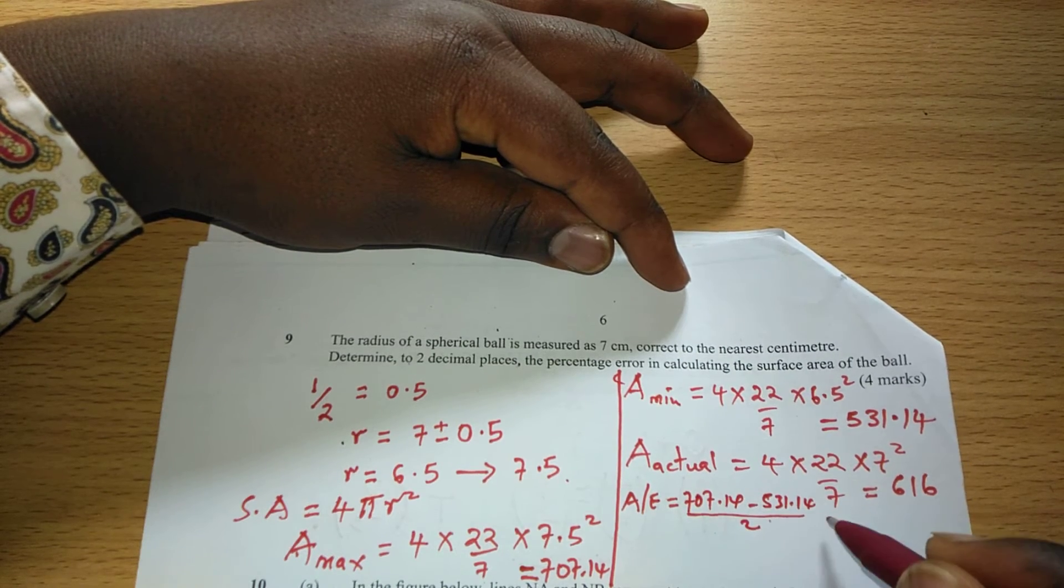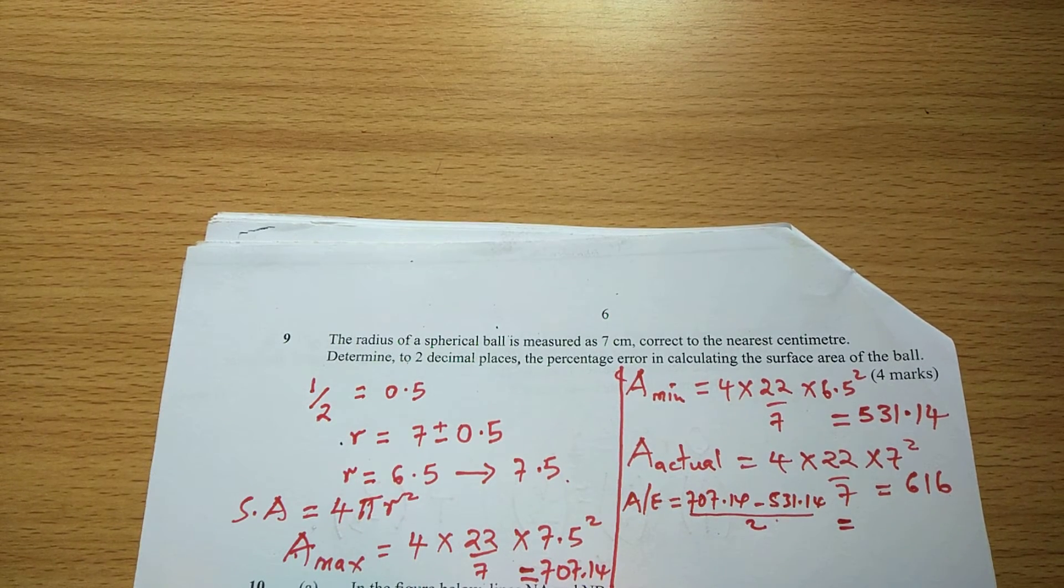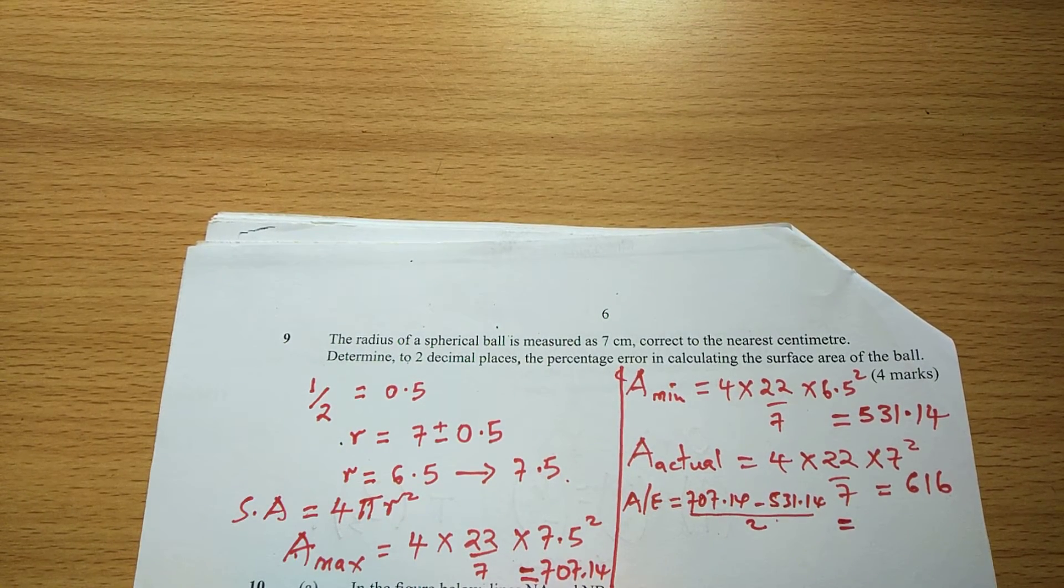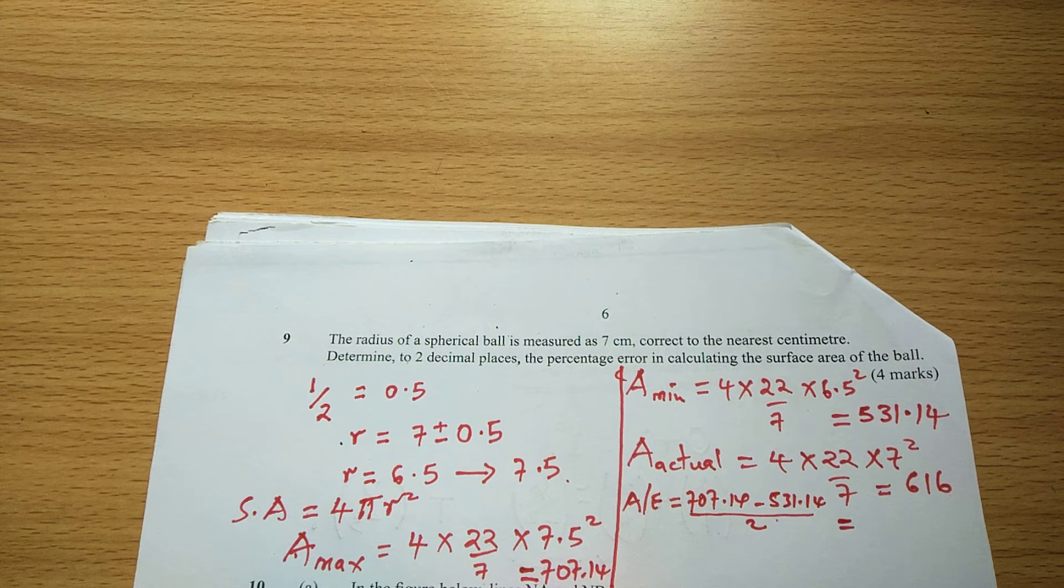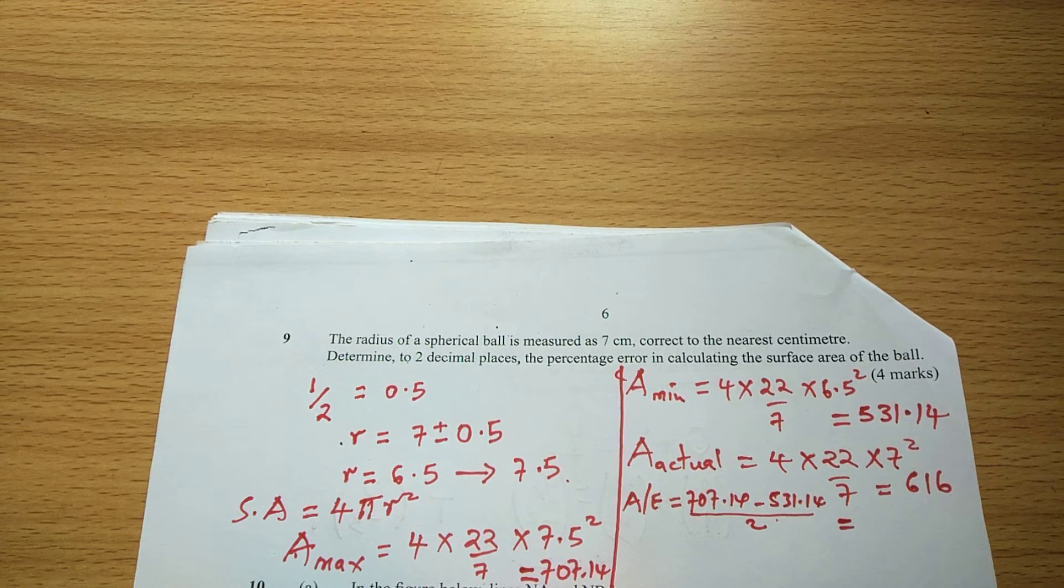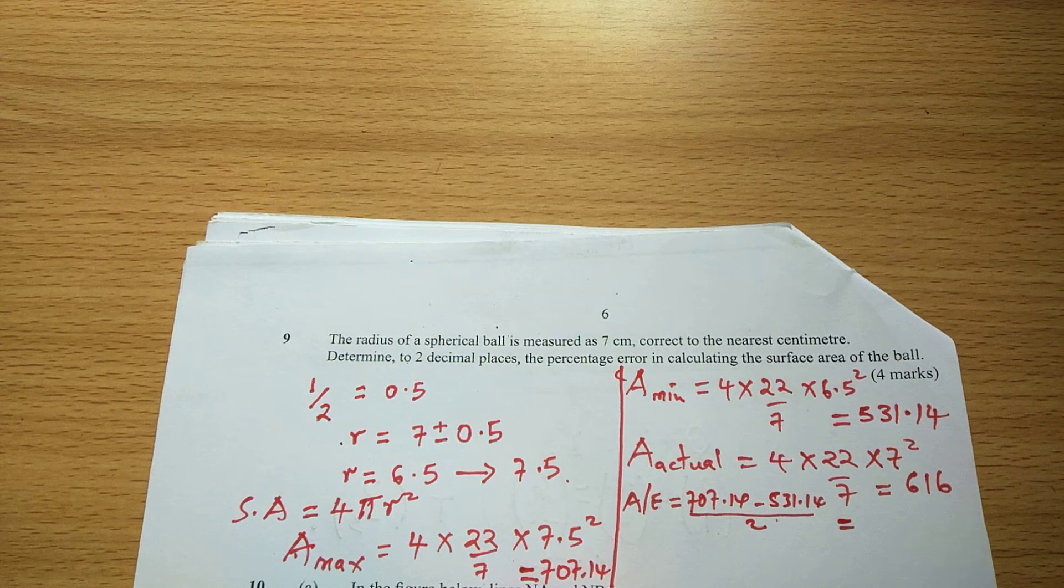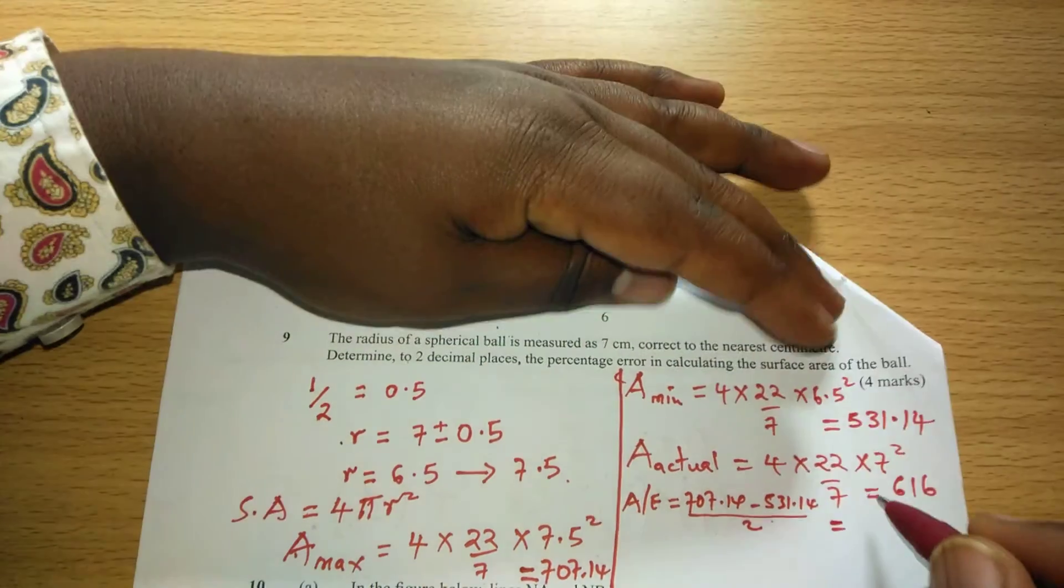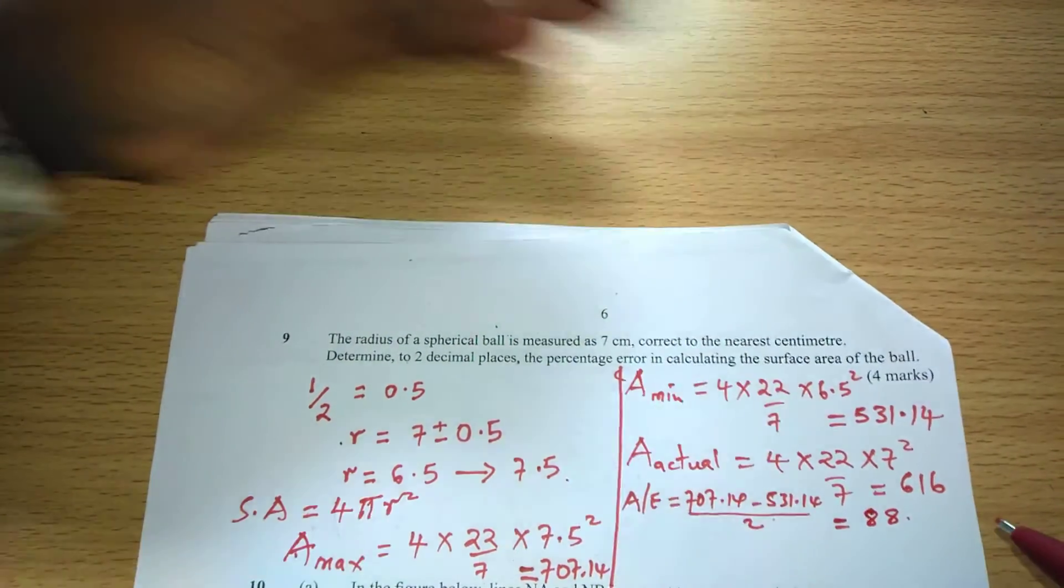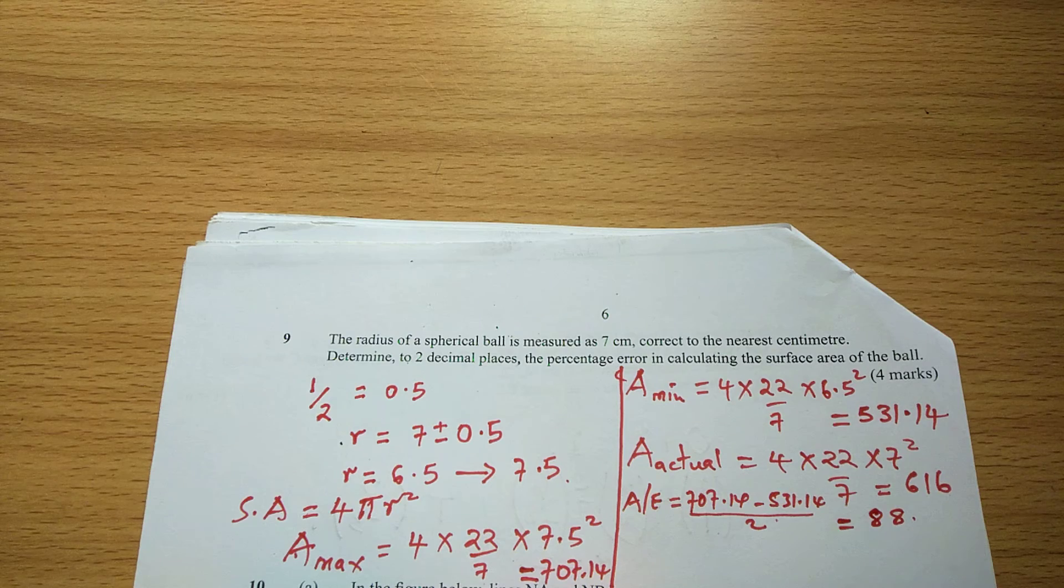This is going to give us 88. Therefore the absolute error in the calculation of the surface area is 88.